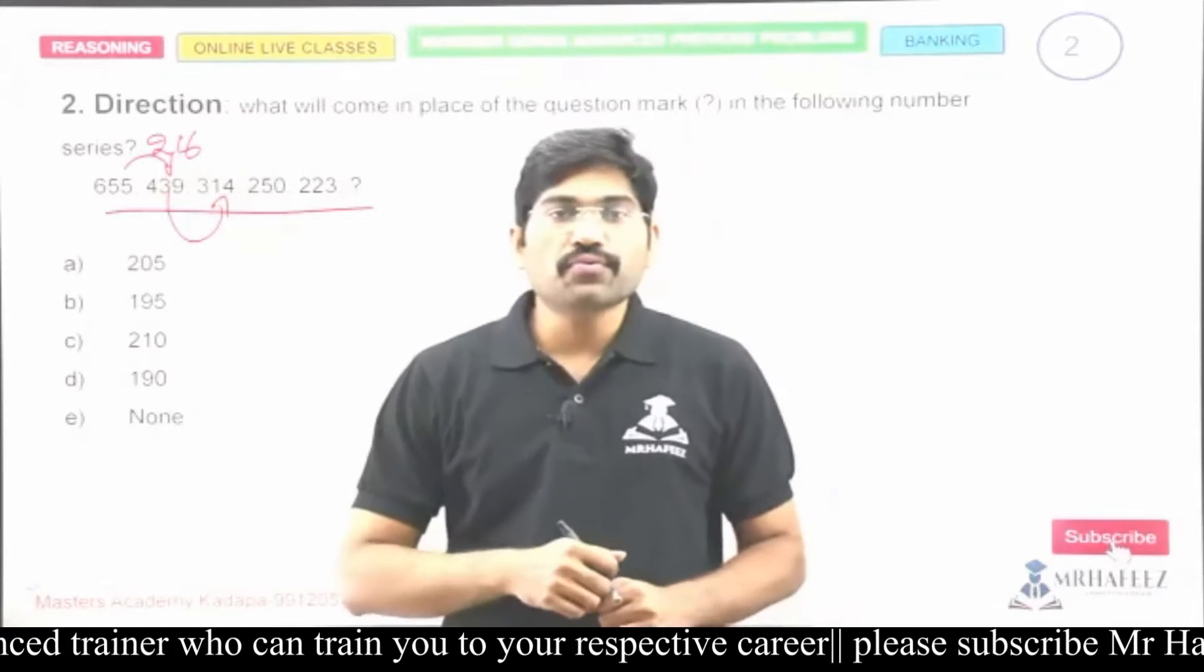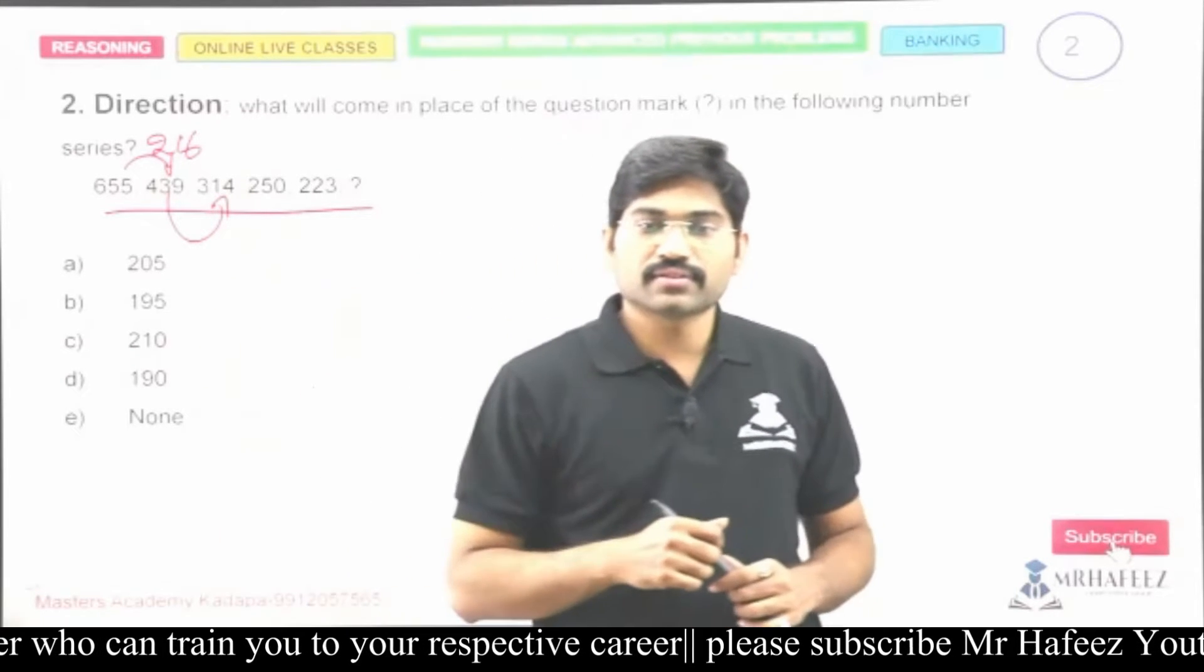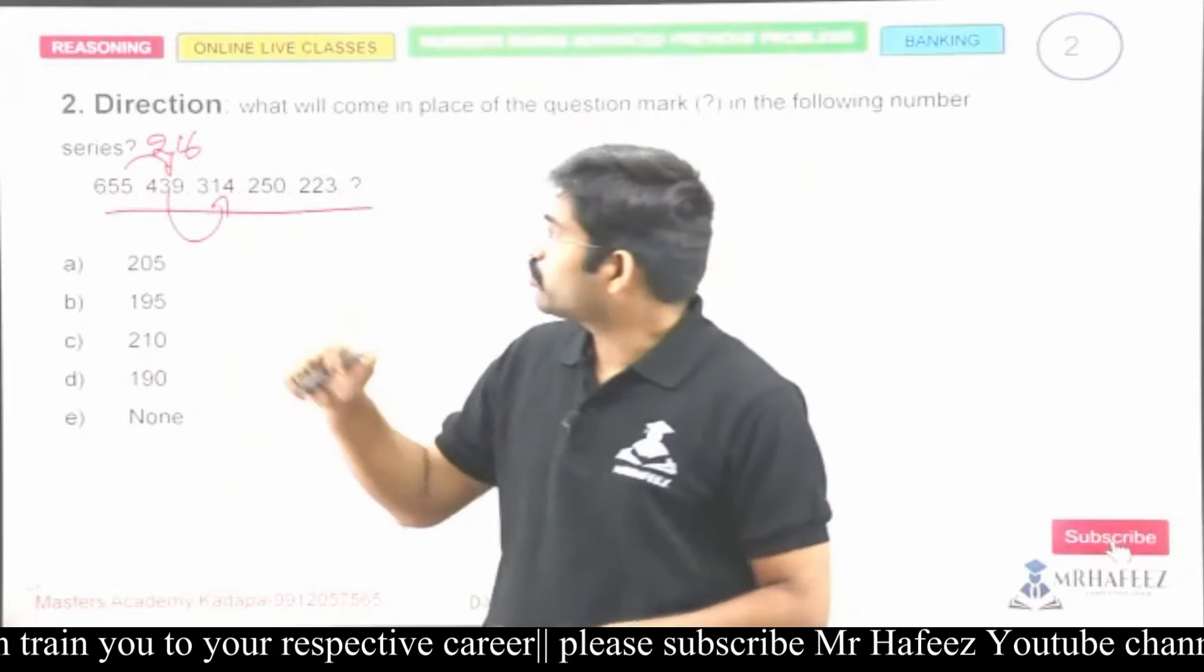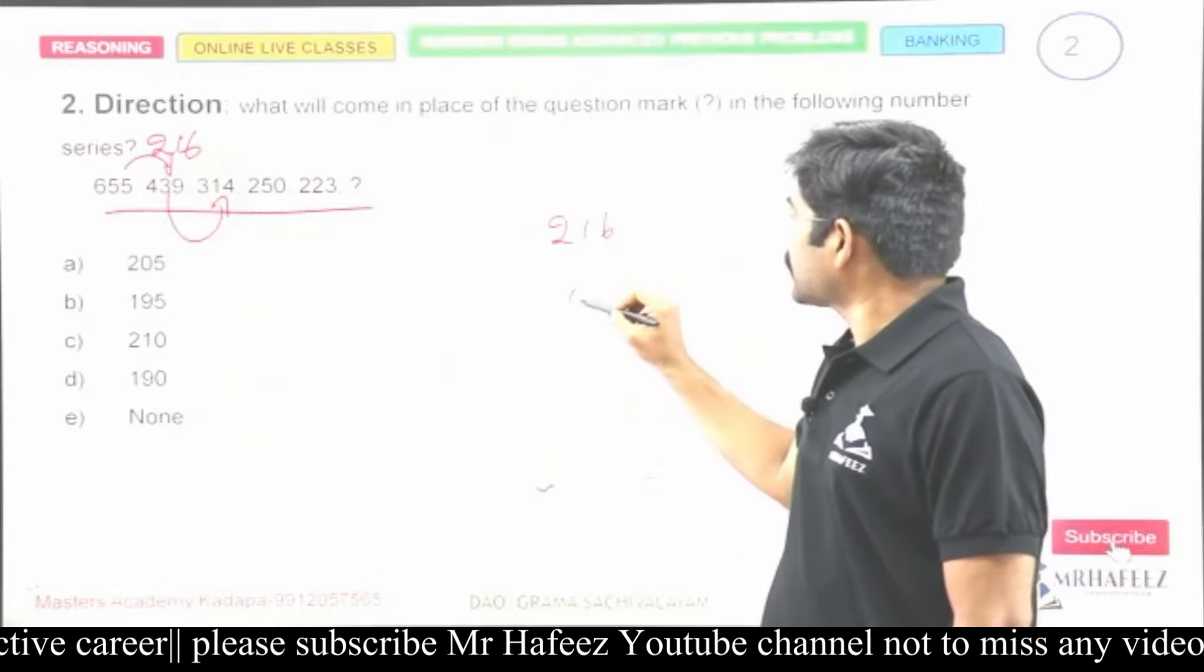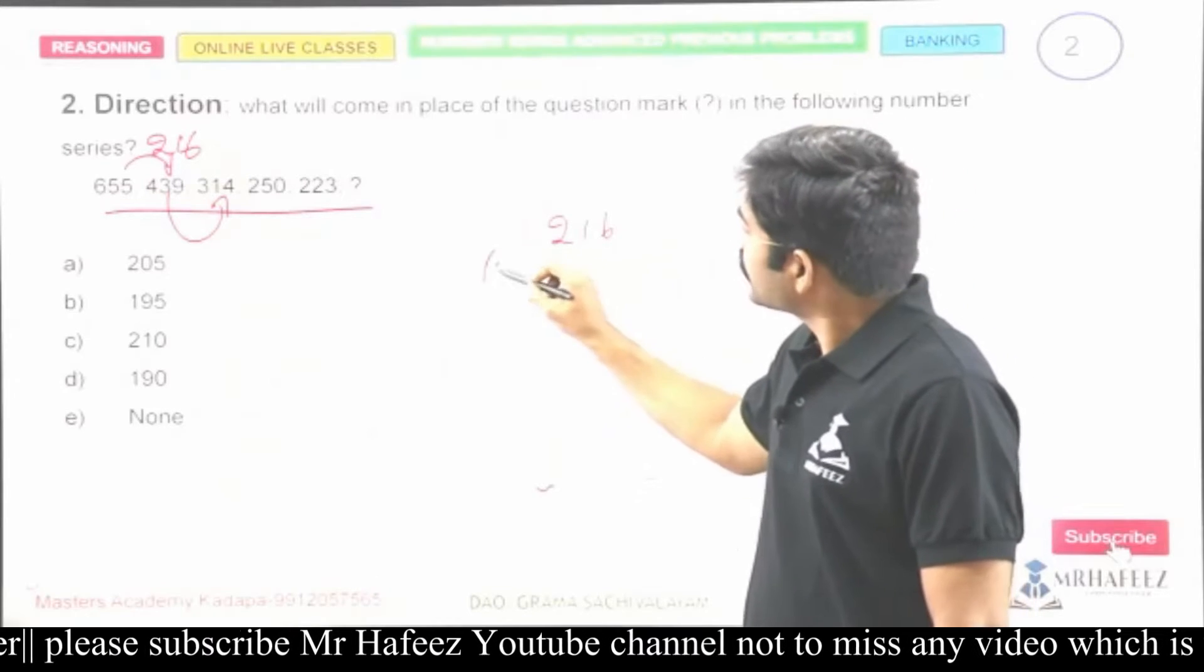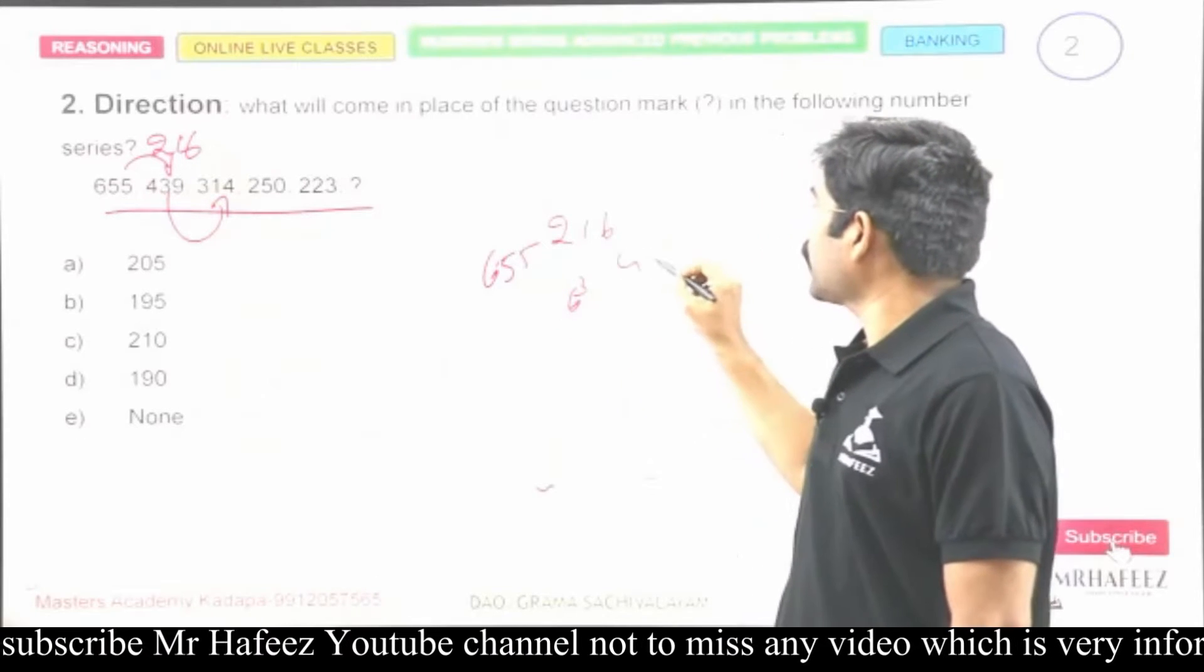Next, four thirty-nine and three one four. What is the difference? Very good, six cube. Yes, it's six cube. So two one six is six cube. So six fifty-five and four hundred and thirty-nine.